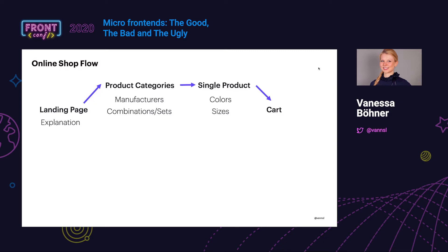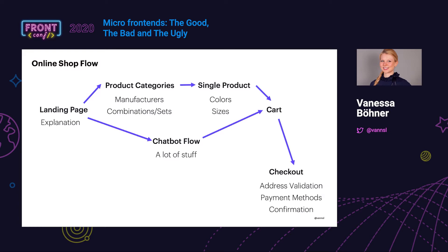If everything looks good, you land in the cart. Nowadays we also have more modern approaches like conversational flows — a chatbot flow — because there's a lot going on in communicating with the user. If we convince you our shop is good, you proceed to checkout: you give us your address, payment information, and when done, you get a confirmation. Afterwards you might want to check your order history and track shipments in an account area.